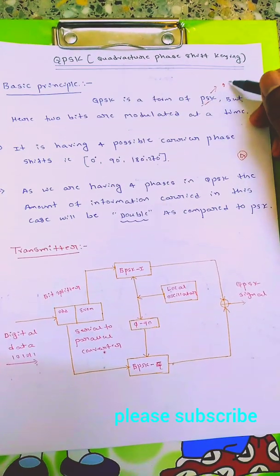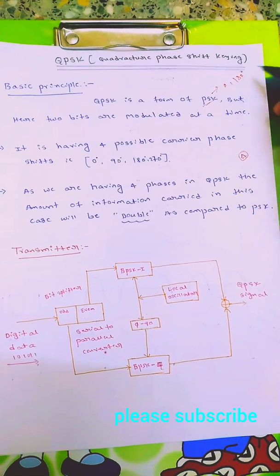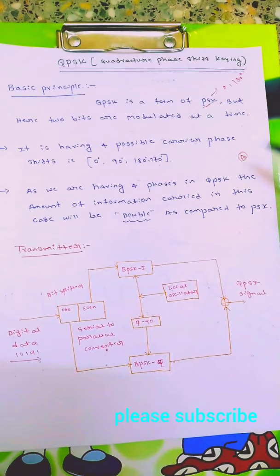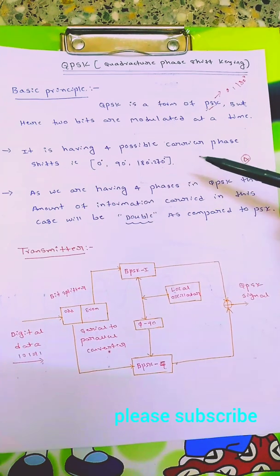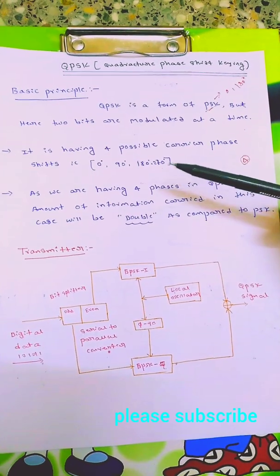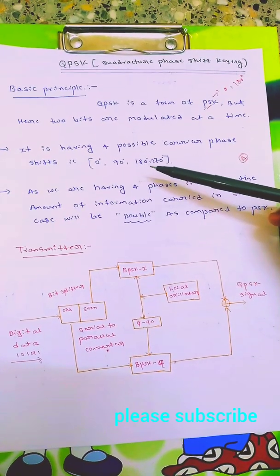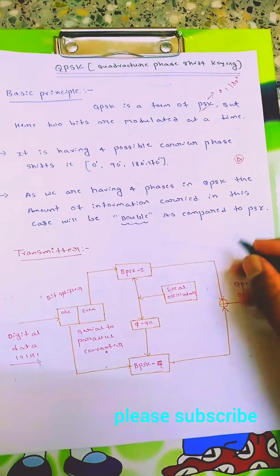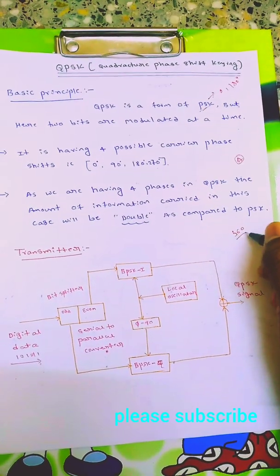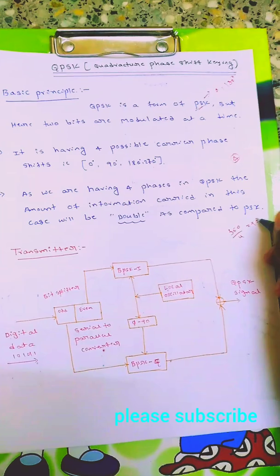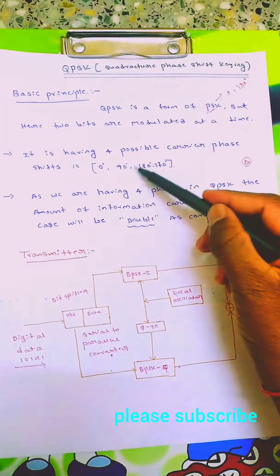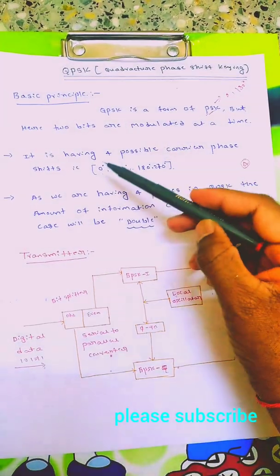In PSK we have 0 and 180 as its phases, but in case of QPSK we have four phases. It has four possible carrier shifts: 0 degree, 90 degree, 180 degree, and 270 degree. So total is 360 divided by 4, that is 90.